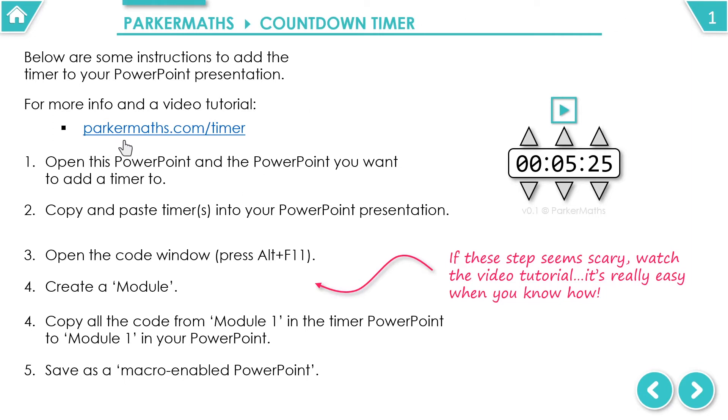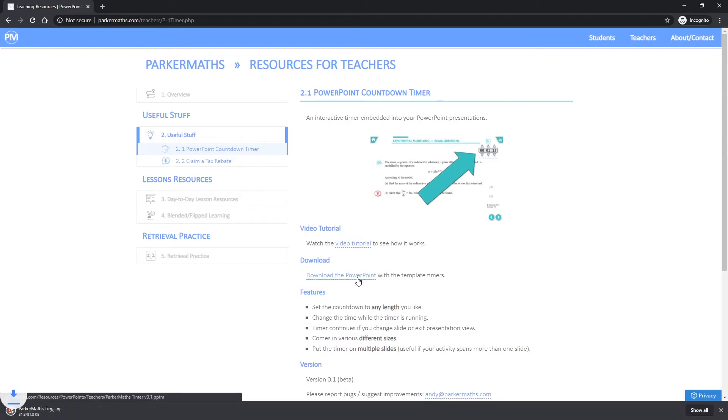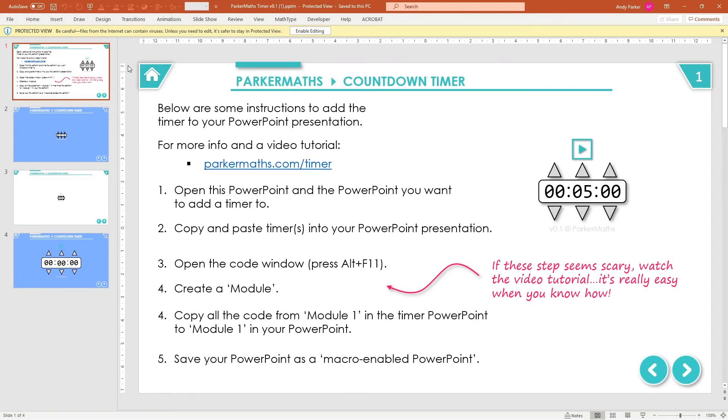So to start with, we need to go to parkermaths.com forward slash timer. If you type that into your web browser it takes you to this page here. If you click to download the PowerPoint and then open it, the first thing you'll need to do is, because you've downloaded this file from the internet, you need to enable editing.